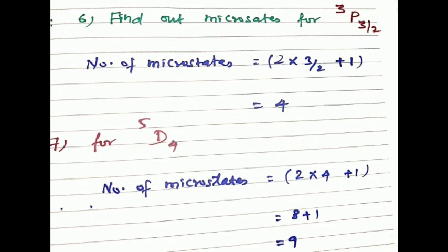To summarize: when a term is given, use (2S plus 1)(2L plus 1) for microstates. When the full term symbol including J is given, use 2J plus 1. Thank you friends.